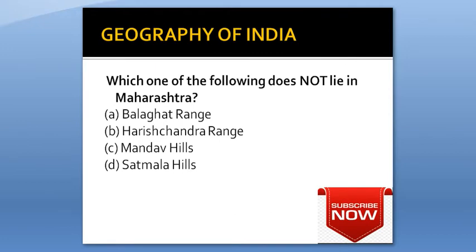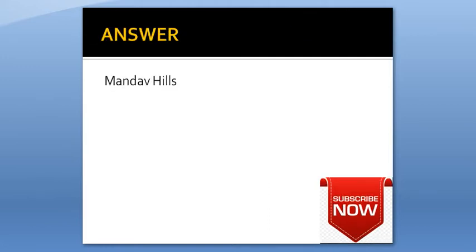Which one of the following does not lie in Maharashtra? Option A: Balaghat Range. Option B: Harishchandra Range. Option C: Mandava Hills. Option D: Satmala Hills. Answer is Mandav Hills.